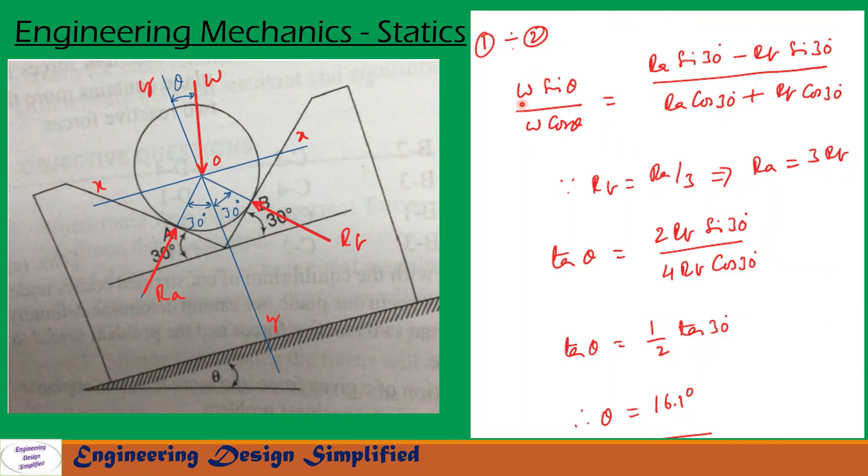W gets cancelled in this equation and sin theta by cos theta will become tan theta. So, tan theta equal to, after substituting Ra equal to 3Rb, this side of the equation will become 2Rb sin 30 by 4Rb cos 30. After simplification, we get tan theta equal to 1 by 2 into tan 30. After further evaluation, we get theta equal to 16.1 degree.